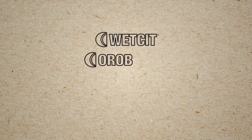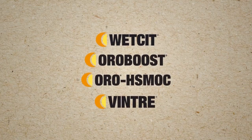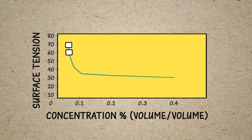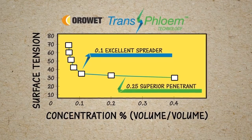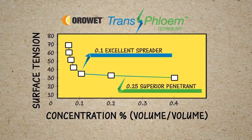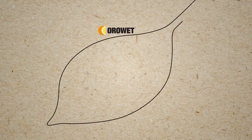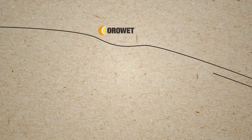OroAgri has simplified this process of choosing the correct adjuvant with our line of products designed to provide superior performance in most foliar pesticide and nutrient applications. This is accomplished by formulating our foliar adjuvants with a rate-dependent mode of action and our proprietary OroWet and TransFloam technologies. OroAgri adjuvant products are specially formulated to provide excellent spreading at low rates for use with contact pesticides and superior penetration at higher rates for use with systemic pesticides, like glyphosate. OroWet technology allows spray solutions to be absorbed quicker into the leaves for improved rain fastness and faster translocation within plants.